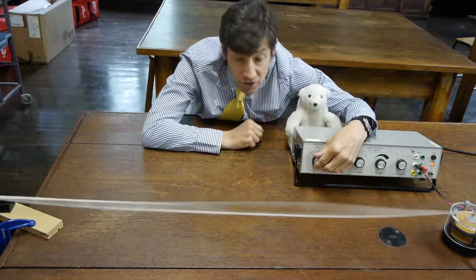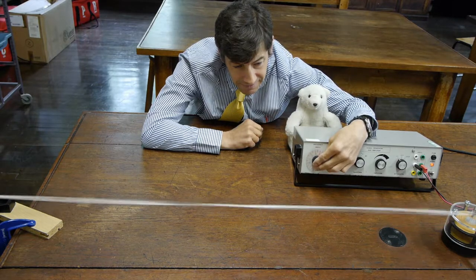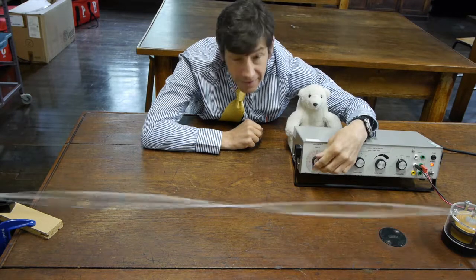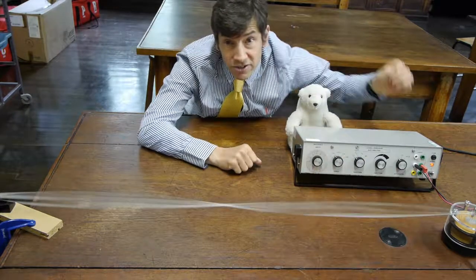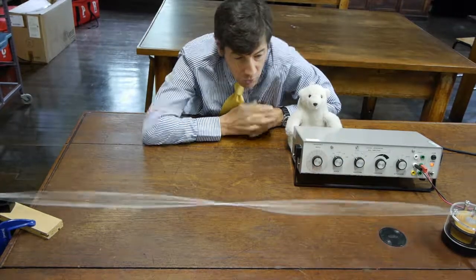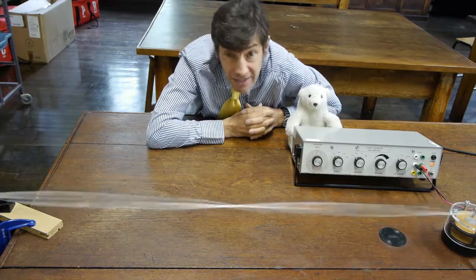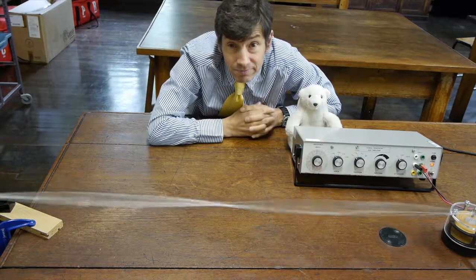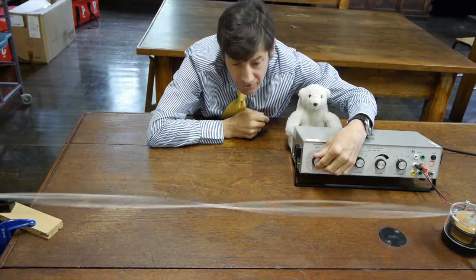And if I get the frequency just right, we get another shape forming on the rubber cord. We get what looks like two loops. In fact, if you look carefully, it actually looks a bit like one wave. It goes all the way up and all the way down. But let's see what happens if we go up to an even higher frequency.